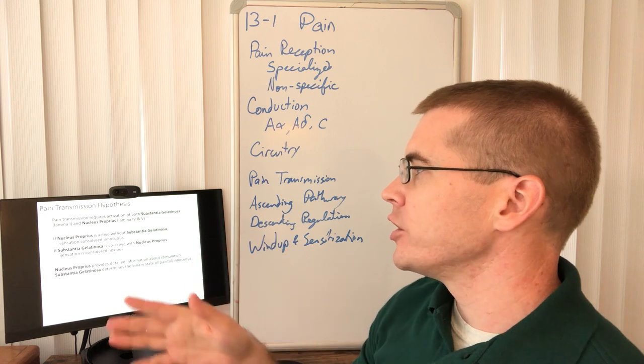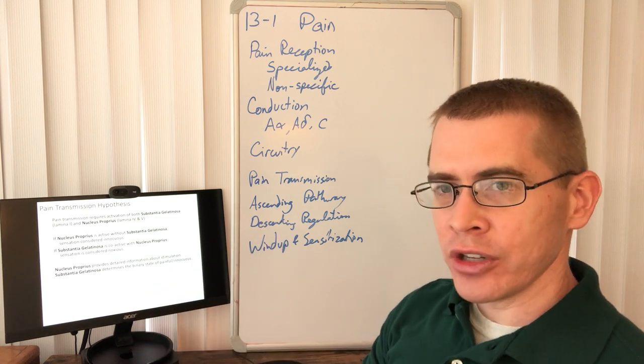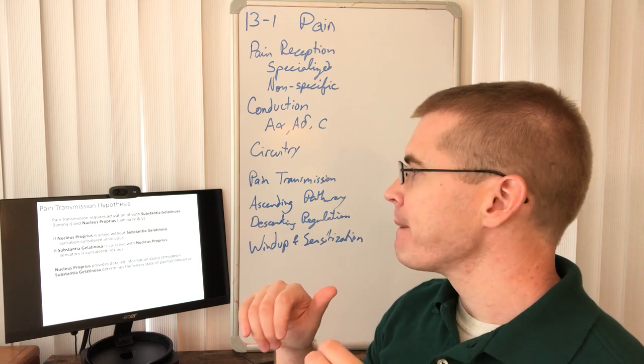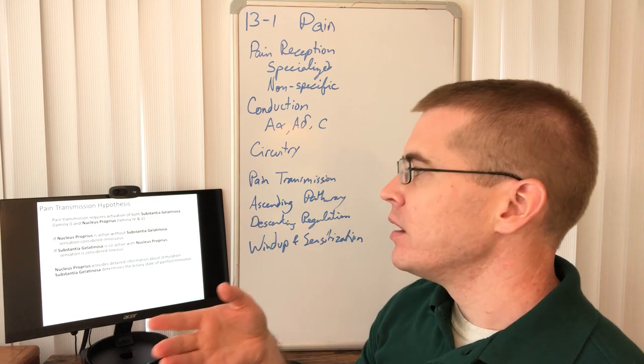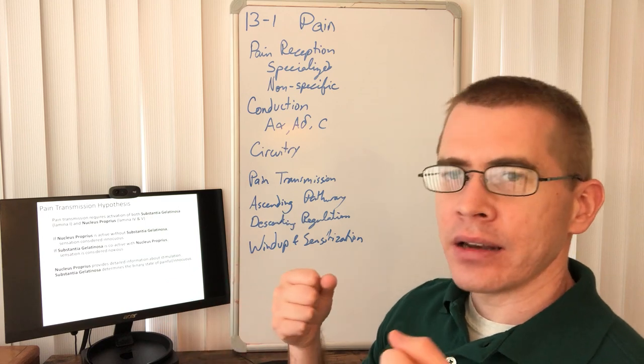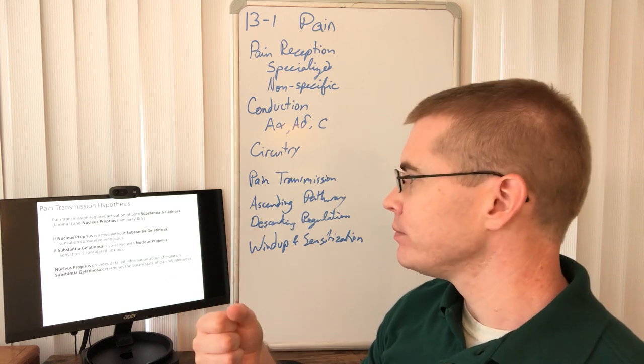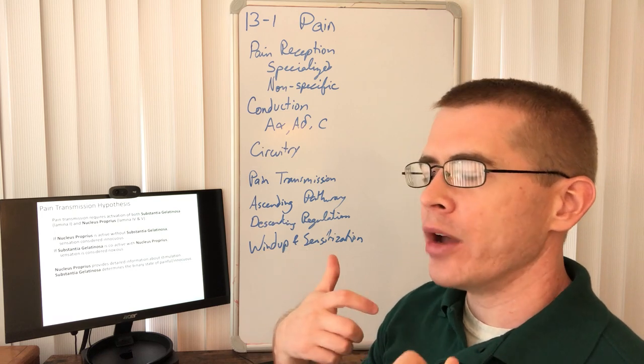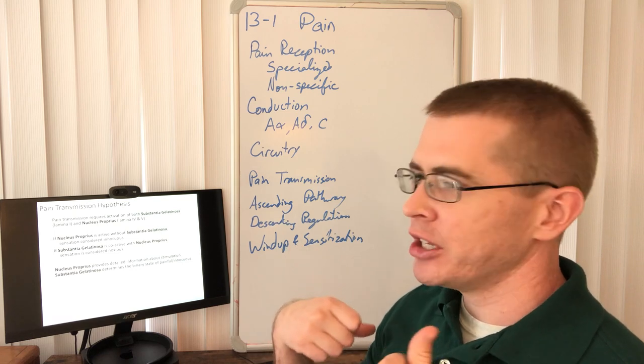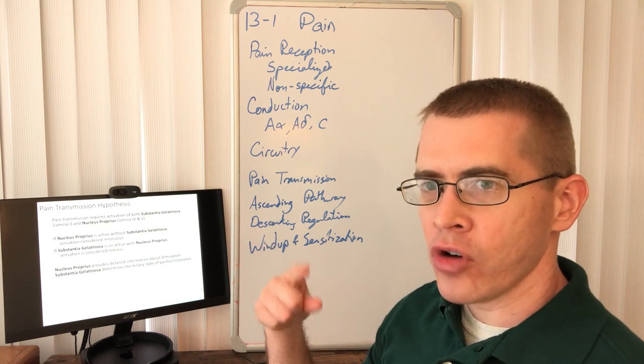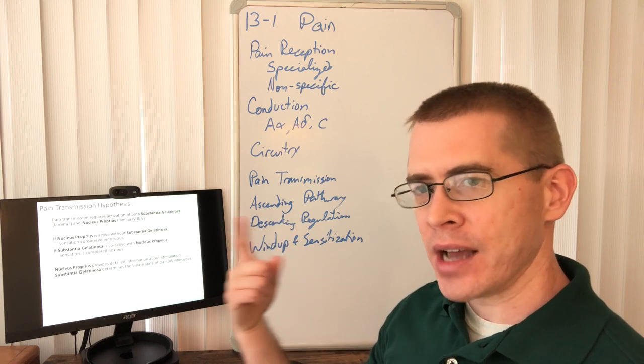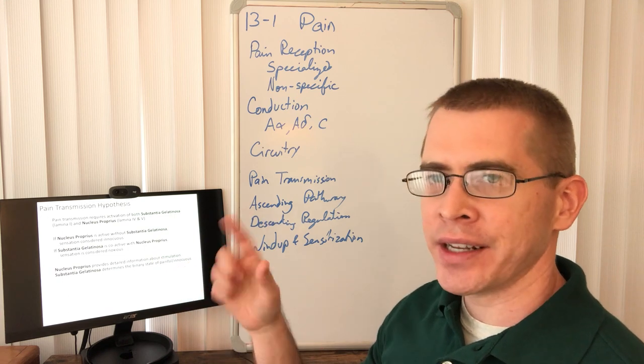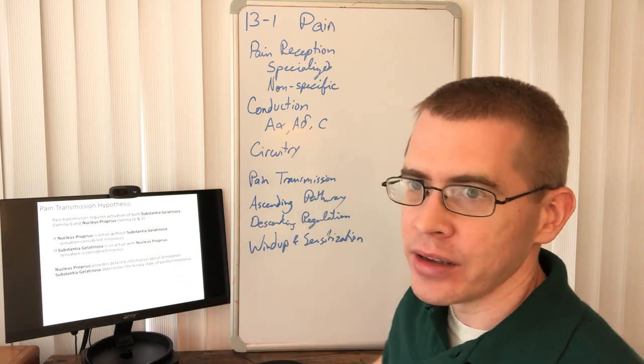If the nucleus propria is activated without substantia gelatinosa, then you just get normal non-noxious somatosensation. If they're co-activated, then you get that noxious pain sensation. So nucleus propria is providing information about what you're feeling. And substantia gelatinosa is saying yes or no, painful or not painful. Is this a noxious or non-noxious stimulus? If it's noxious, it's activated and sends that yes, pain signal up.